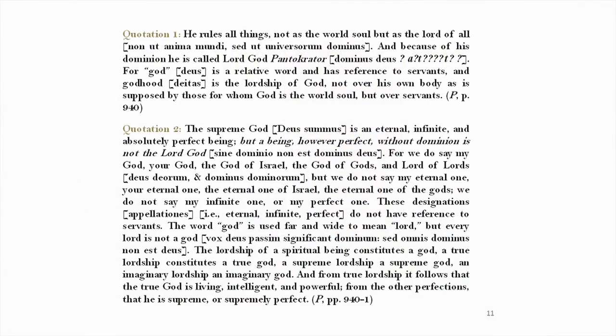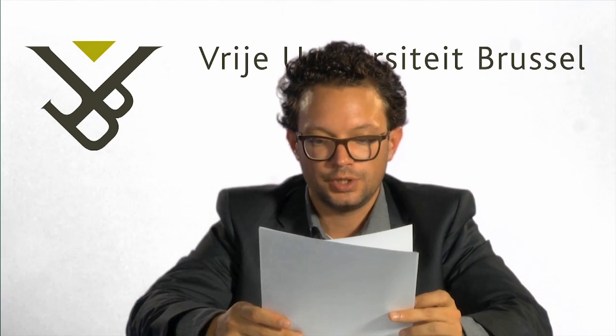Newton then developed the implications of his relative conception of God — quotation two on page eleven. In this passage, which has anti-Trinitarian implications for those with eyes to see it, Newton explained that God is to be defined not in terms of essence, but in terms of dominion. For it is dominion or lordship that properly constitutes godhood. In the second draft, Newton underscored that 'the dominion of God, or godhood, is best demonstrated not from abstract ideas, but from phenomena and their final causes.' This reflects Newton's endeavour to avoid metaphysical disputes on the nature of God.